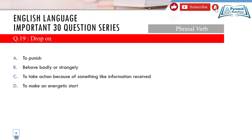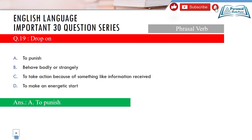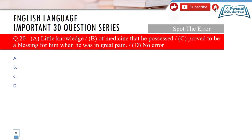Question 19 is a phrasal verb question. The phrasal verb is 'drop on.' The correct meaning is option A — to take action because of something, like information received.